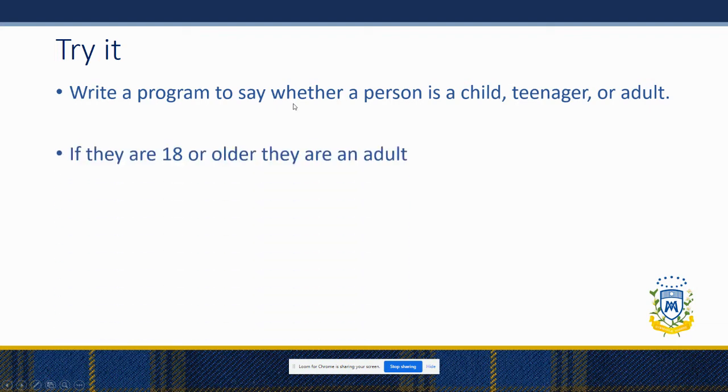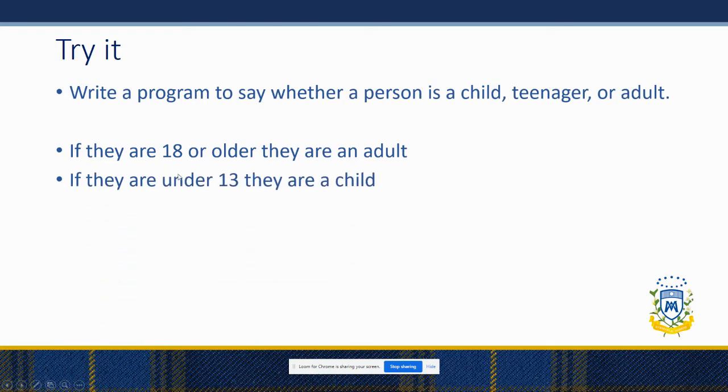If they're aged 18 or older, they're an adult. If they're under 13, they're a child. Otherwise they're a teenager. Do it in this order: write your first if, your elif, and your else.